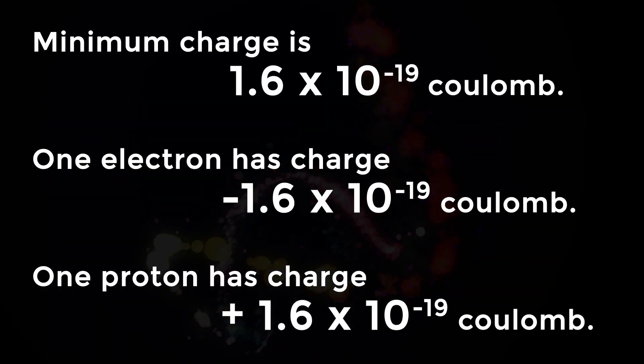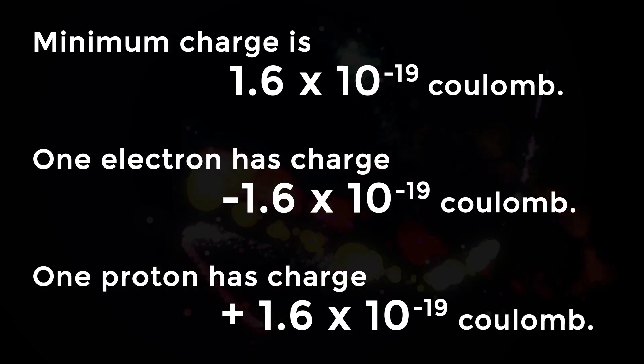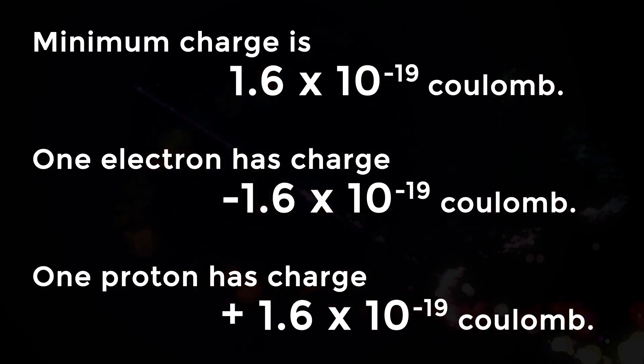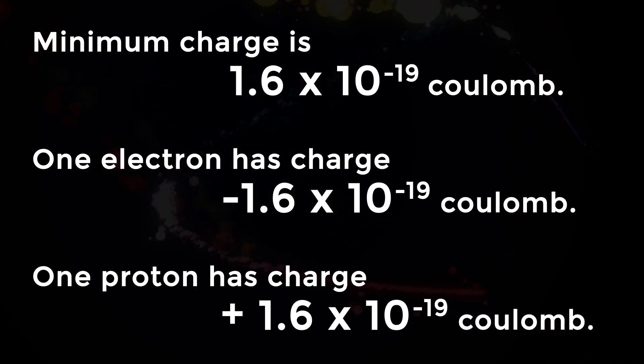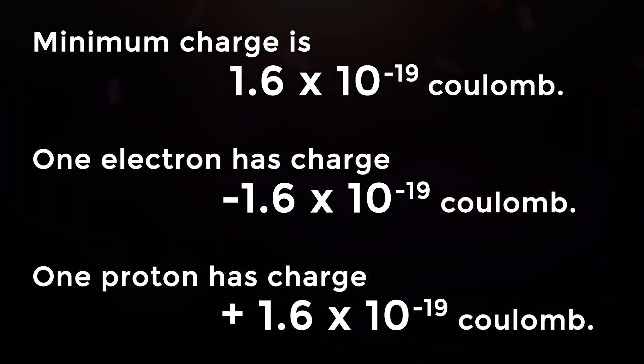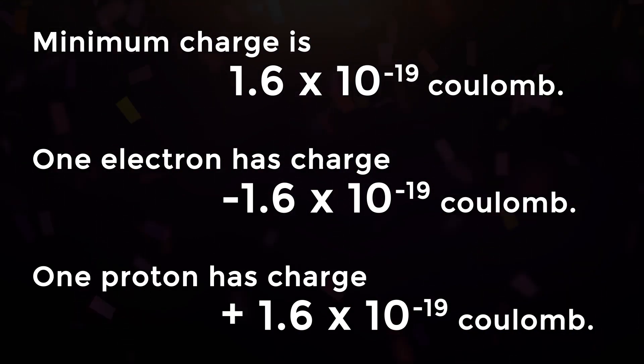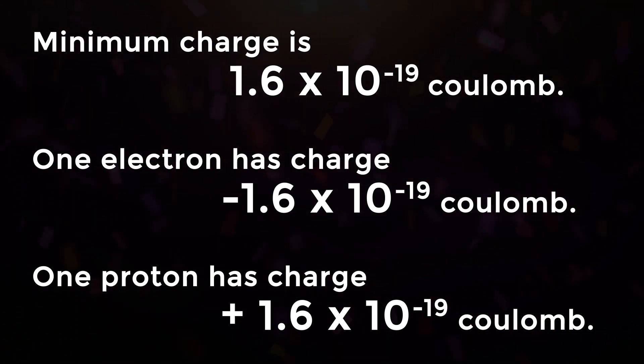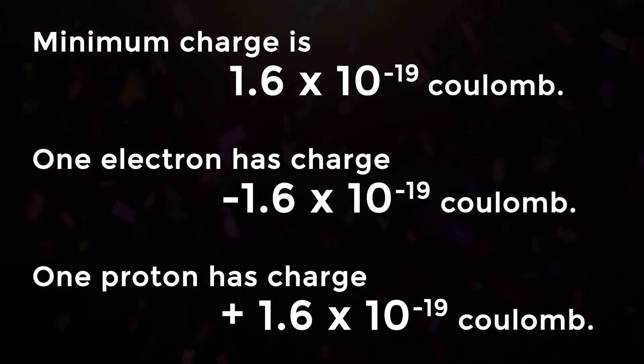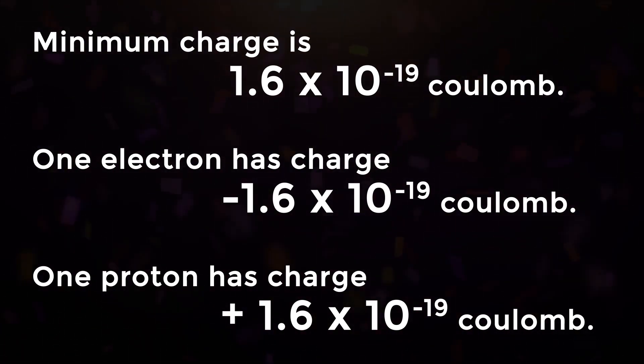Charge on an electron minus e and charge on proton plus e are equal and opposite and are the minimum. This minimal charge is 1.6 × 10^-19 coulomb. One electron has charge -1.6 × 10^-19 coulomb. One proton has charge +1.6 × 10^-19 coulomb.